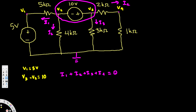Now let's write the currents in terms of voltages. i1 is V2 minus V1 over 5, and since V1 is already 5 volts, we write V2 minus 5 over 5 kilohms. Then i2 is the current from V2 going to ground — that's zero voltage — so i2 equals V2 minus 0 over 4, which is V2 over 4.